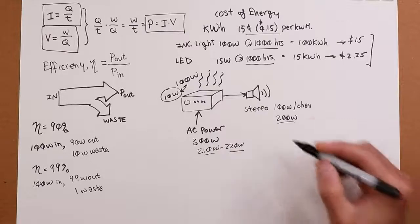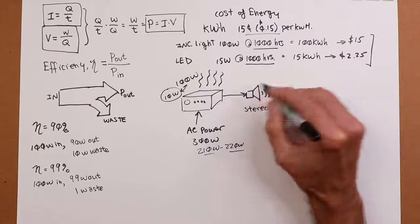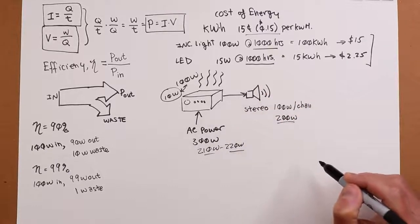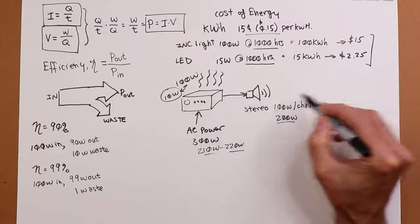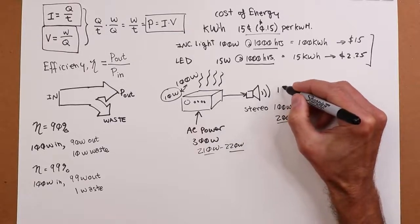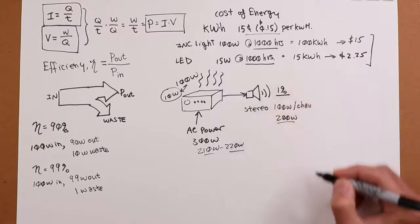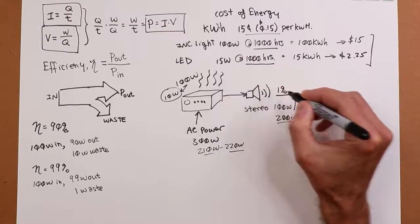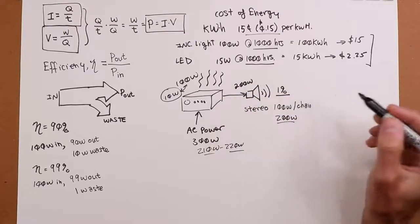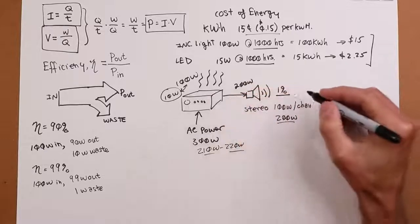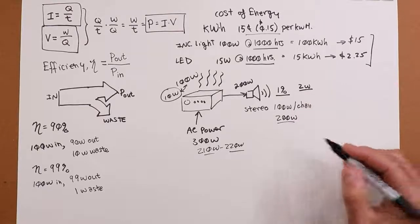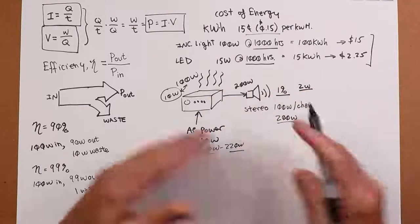To make things more interesting, we have to talk about the conversion efficiency of the loudspeaker itself. Loudspeakers are among the least efficient things you have in your home. So to go from this electrical input to an acoustical output, the conversion efficiency on a standard home loudspeaker is probably only around one, maybe two percent. So we pump in 200 watts into our pair of loudspeakers. If it's one percent efficient, 200 watts electrical coming in only turns into two watts acoustical going out.